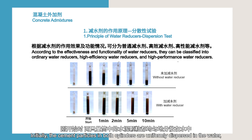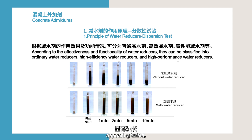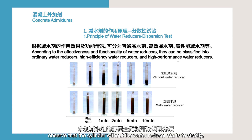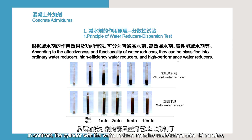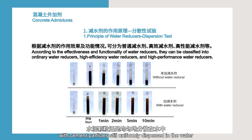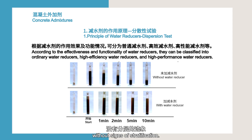Initially, the cement particles in both cylinders are uniformly dispersed in the water, appearing turbid, with no significant difference between the two. After one minute, the cylinder without the water reducer starts to stratify and the settling speed increases. By five minutes, sedimentation is complete. In contrast, the cylinder with the water reducer remains undisturbed after 10 minutes, with cement particles still uniformly dispersed in the water without signs of stratification. This demonstrates the dispersing effect of water reducers.